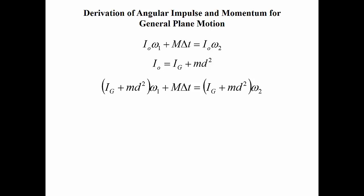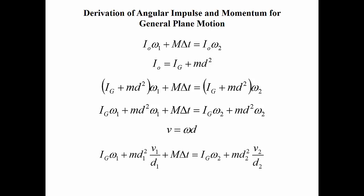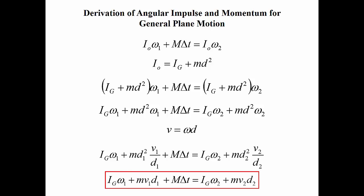Substituting that into our equation and distributing our angular velocity, and noting that translational velocity equals angular velocity times distance d, then substituting and cancelling, we end up with: mass moment of inertia about the center of gravity times angular velocity, plus mass times translational velocity times distance, plus moment times change in time, equals mass moment of inertia about the center of gravity times final angular velocity, plus mass times final velocity times distance.